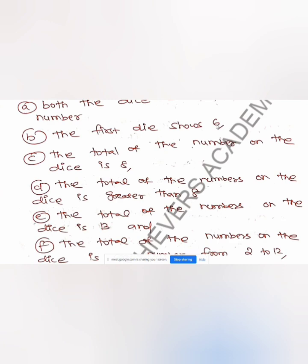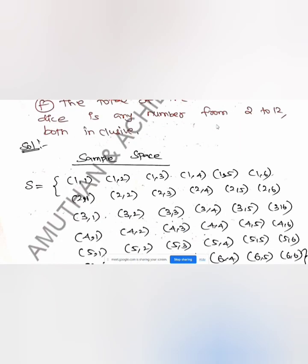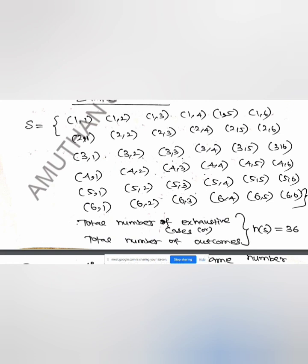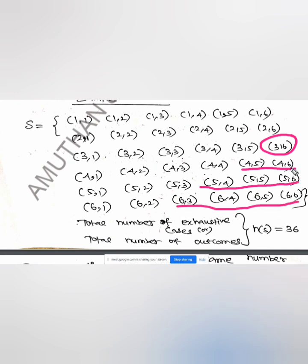The total of the numbers on the two dice is greater than 8. What combinations give a sum greater than 8? We are having 10 possibilities. So the probability is 10 by 36.